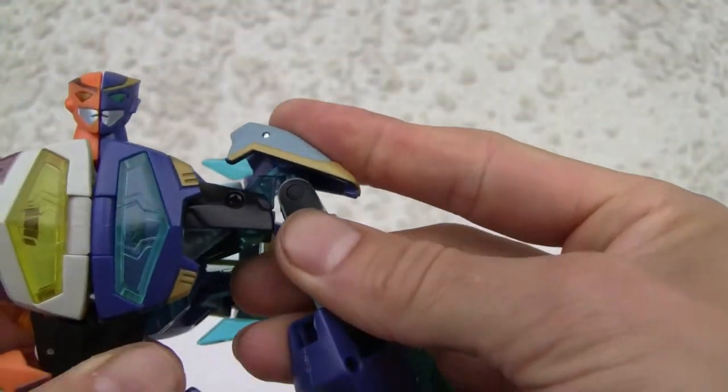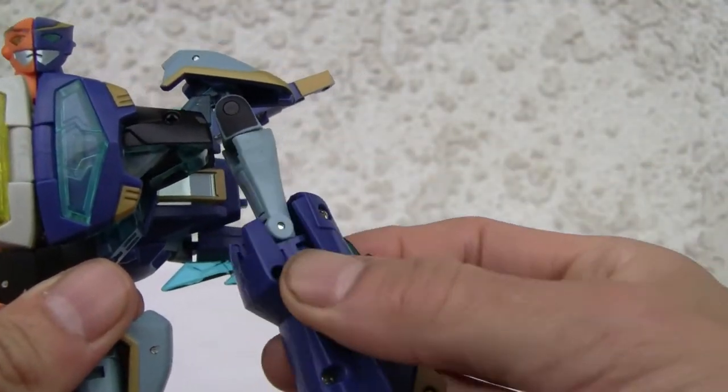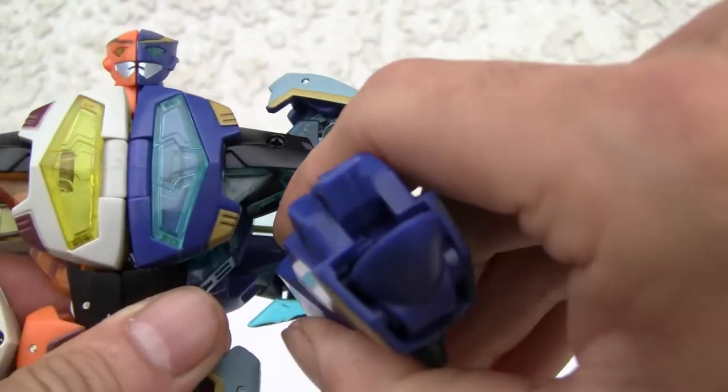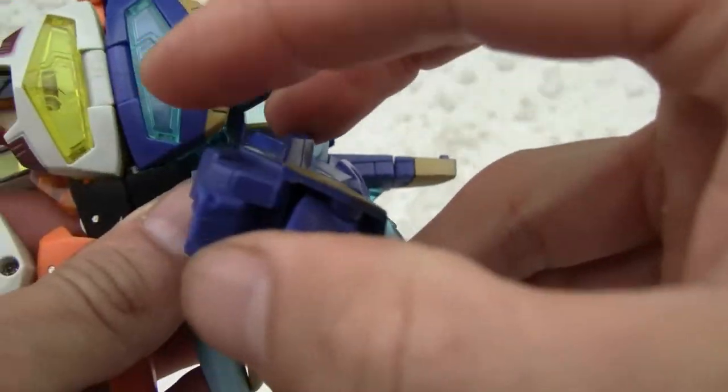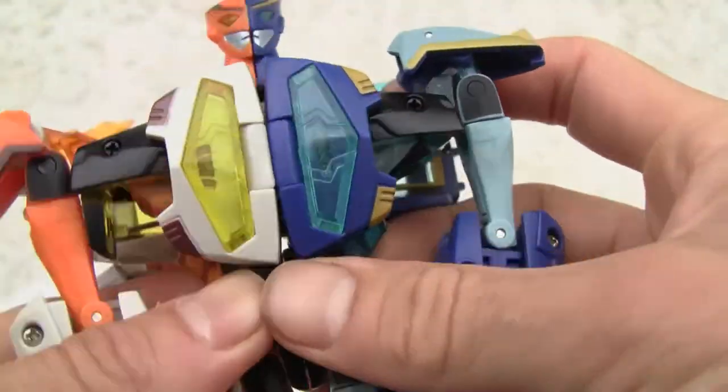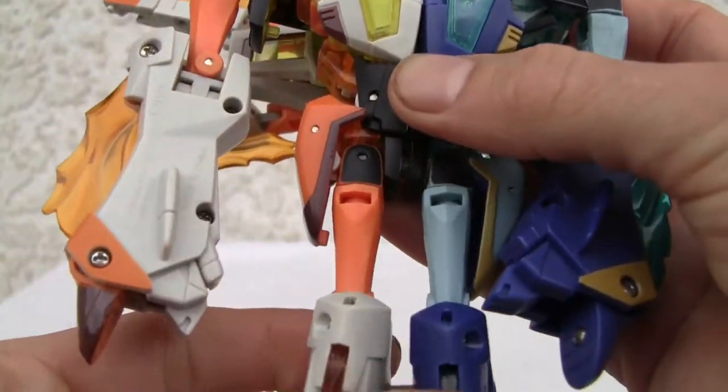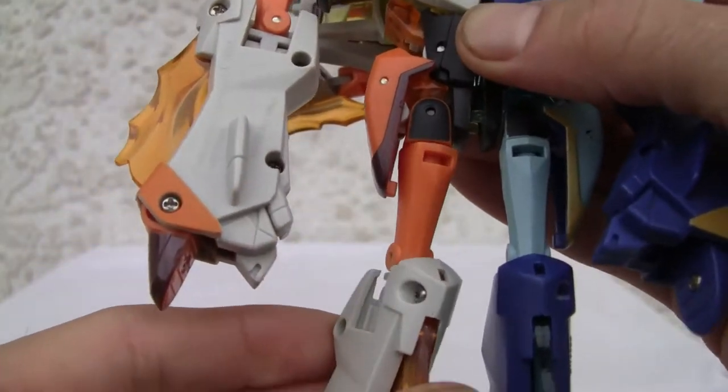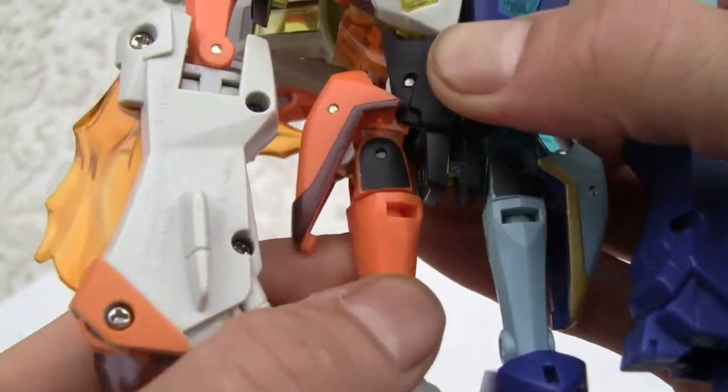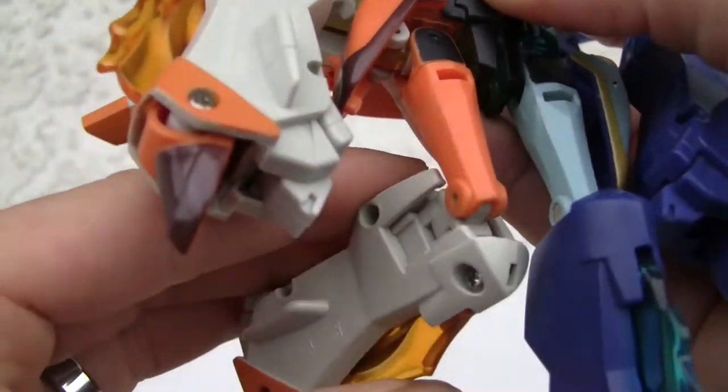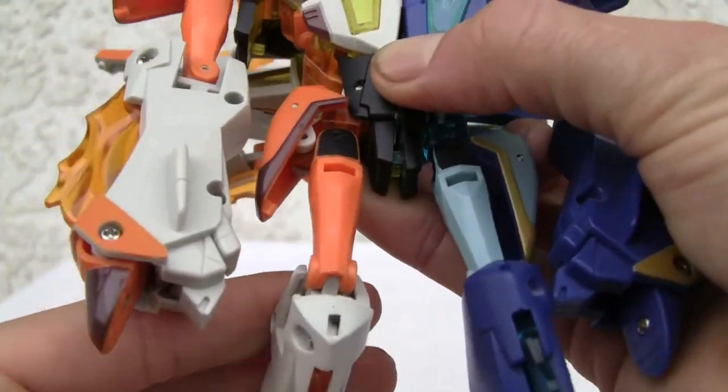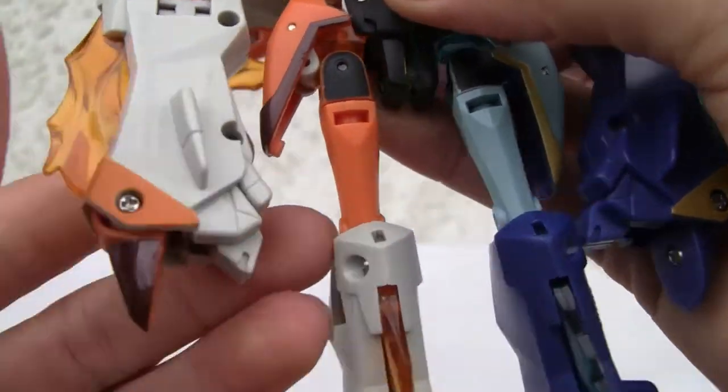I mean, you kinda have shoulder articulation. You've got a bicep swivel. You've got a weird double jointed, because it swivels inward, and you've got somewhat of a fist. More of a claw. No waist articulation, just like the individual figures. Same leg articulation, if not limited by the skirt pieces. Swivel on the thigh. A weird double jointed knee. It goes inward and moves in. So I mean, it's okay.